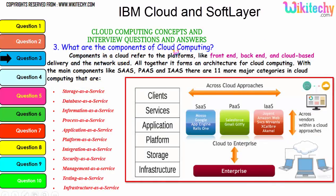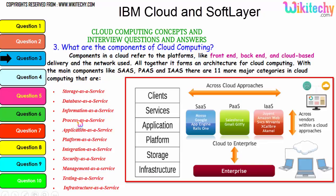Let's talk about the components of cloud computing. Components in a cloud refer to platforms like front-end, back-end, cloud-based delivery, and the network. Together they form the architecture for cloud computing with the main components being SaaS, PaaS, and IaaS. There are 11 major categories in cloud: storage as a service, database as a service, information as a service, process as a service, application platform, integration, security, management, testing, cloud computing, and infrastructure. These are additional services associated with the three major service types.